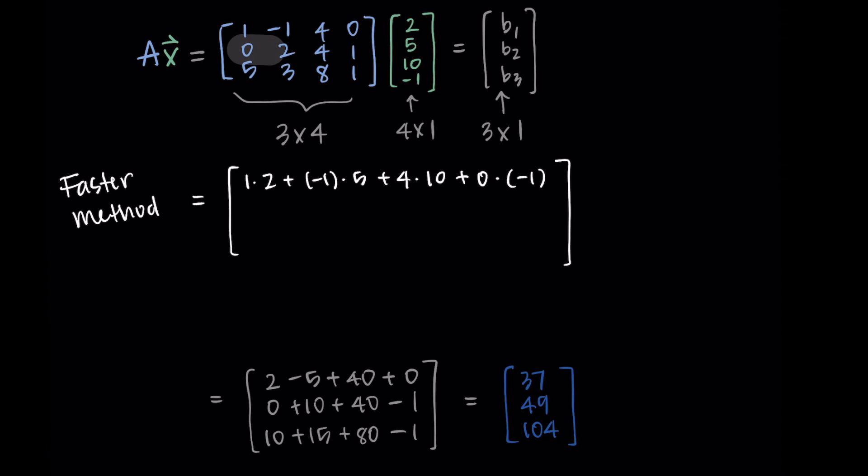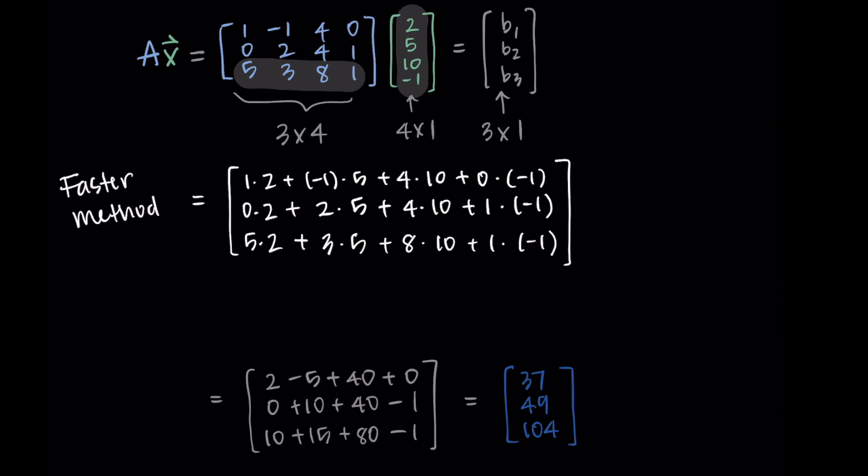Then I do the second row of A multiplied by my x vector. So 0 times 2 plus 2 times 5 plus 4 times 10 plus 1 times negative 1. And then I do my final row times my vector: 5 times 2 plus 3 times 5 plus 8 times 10 plus 1 times negative 1. Then we're just left to simplify.